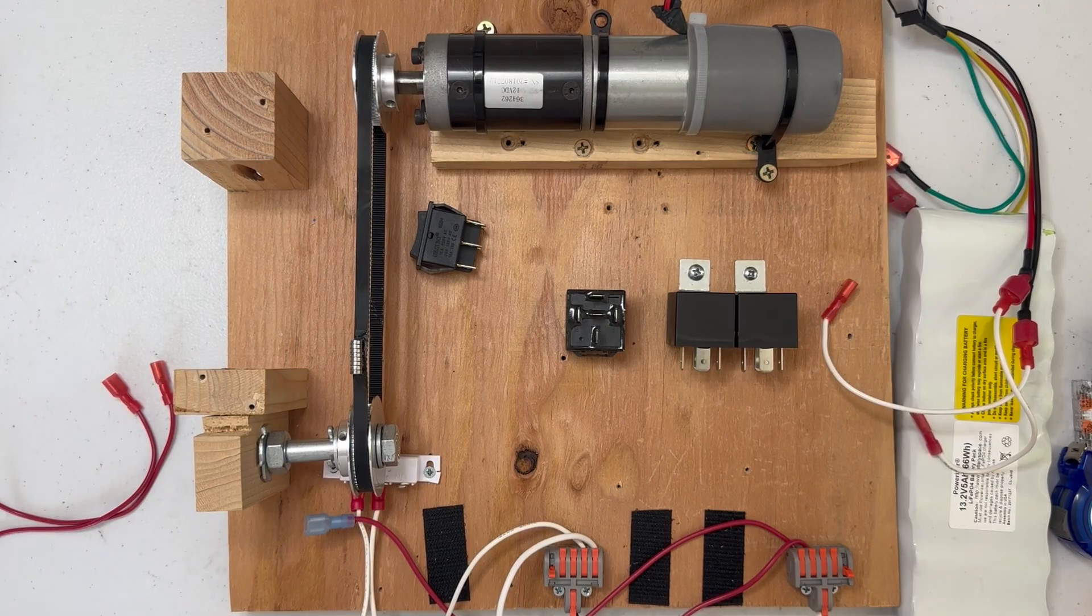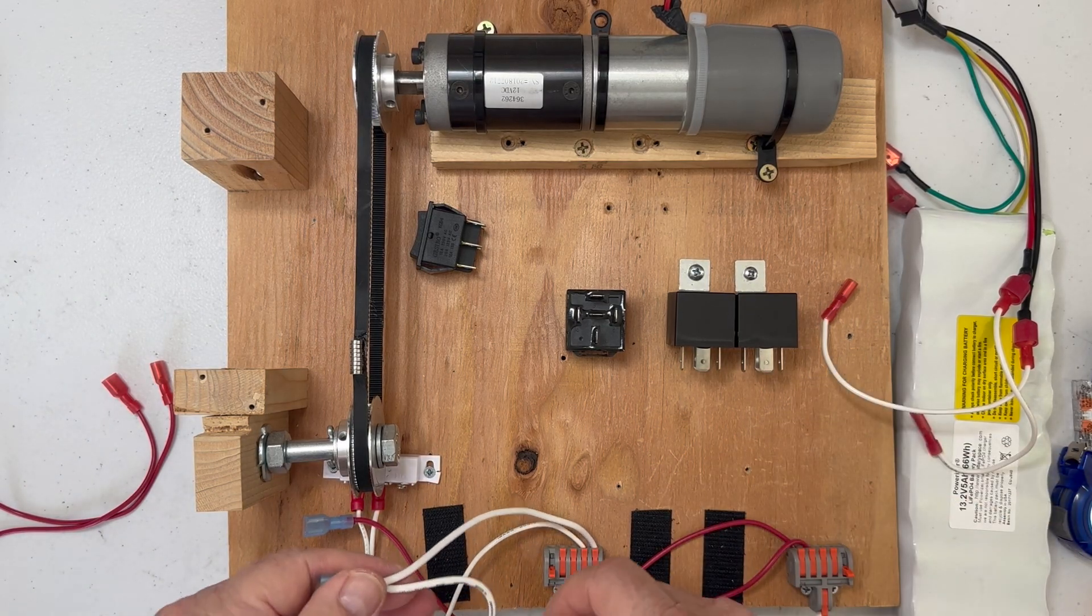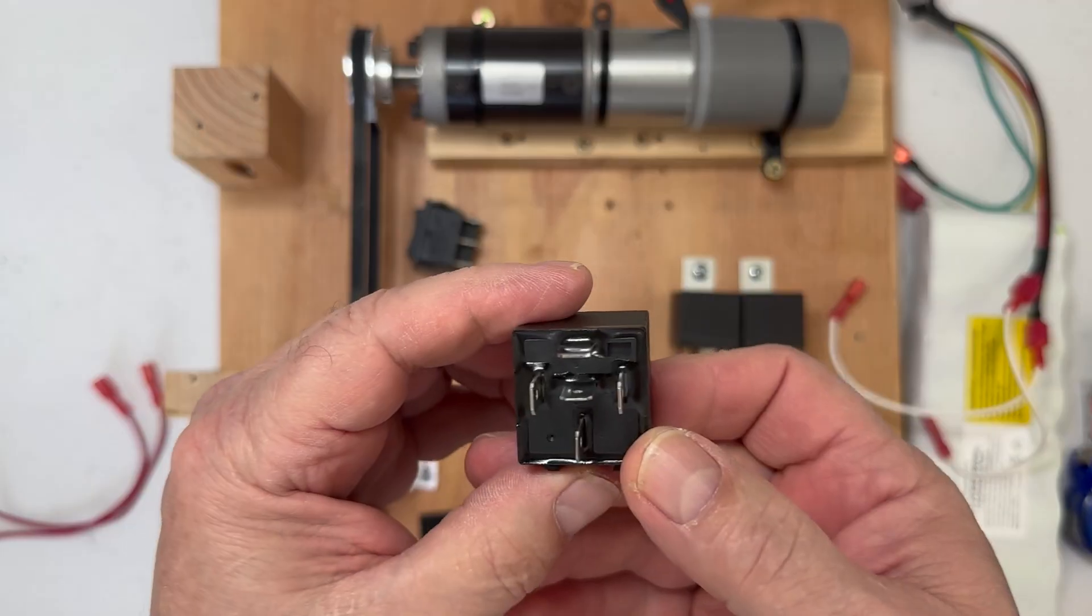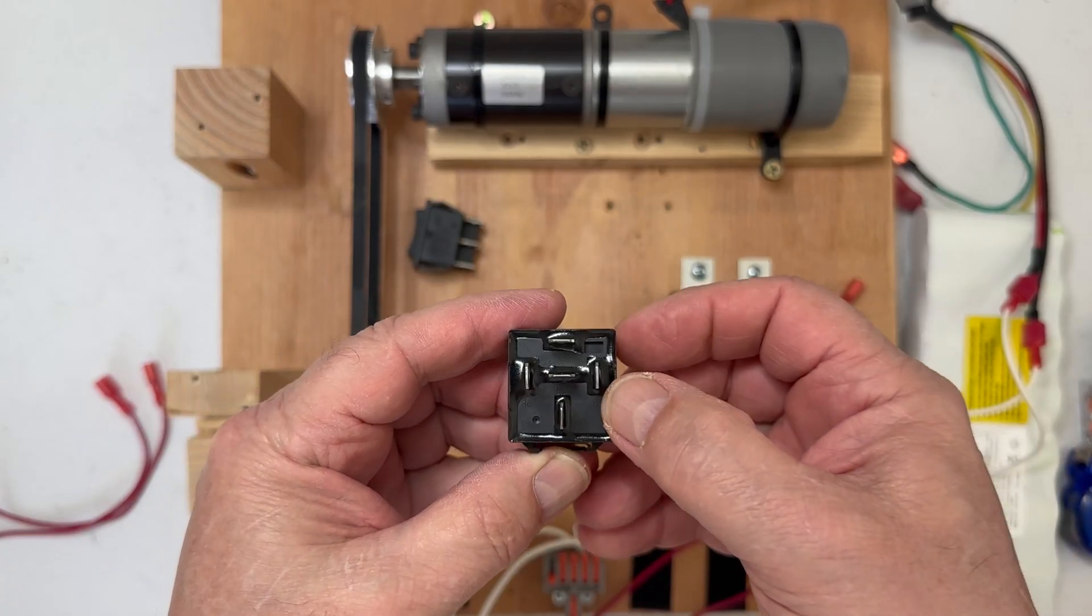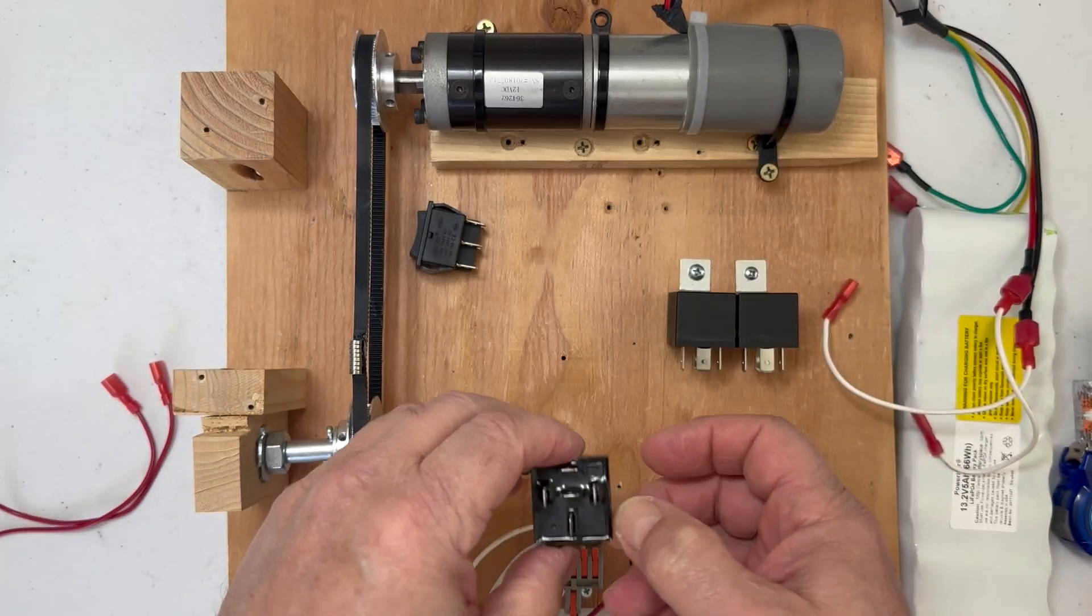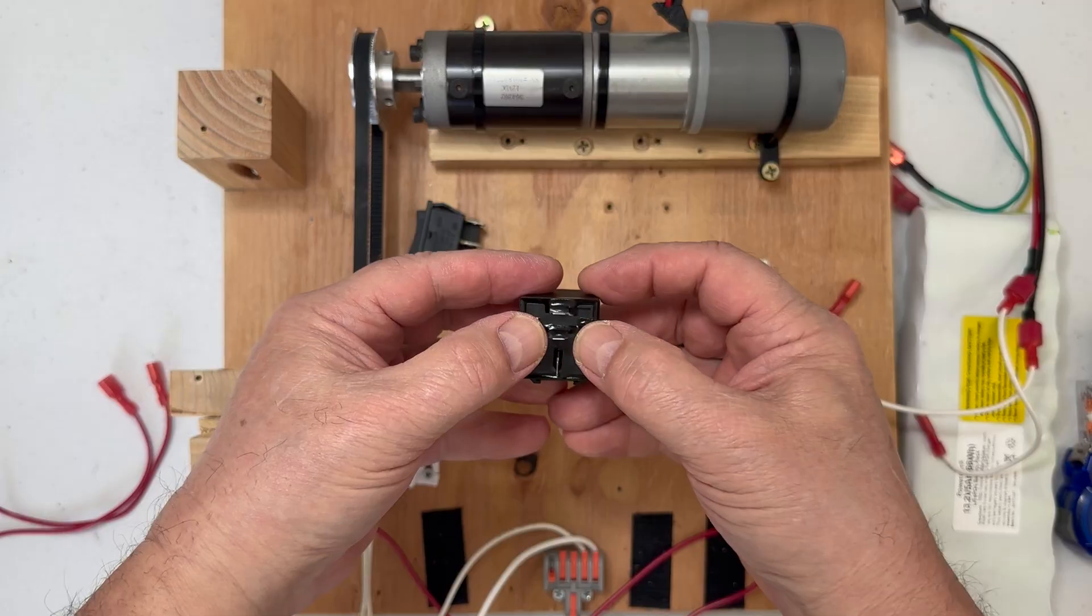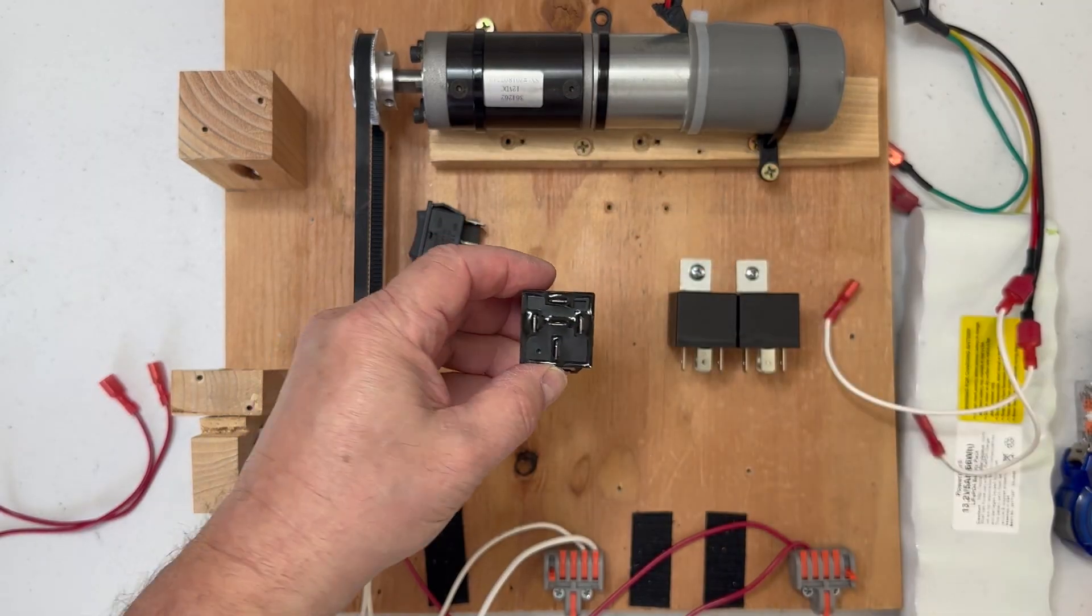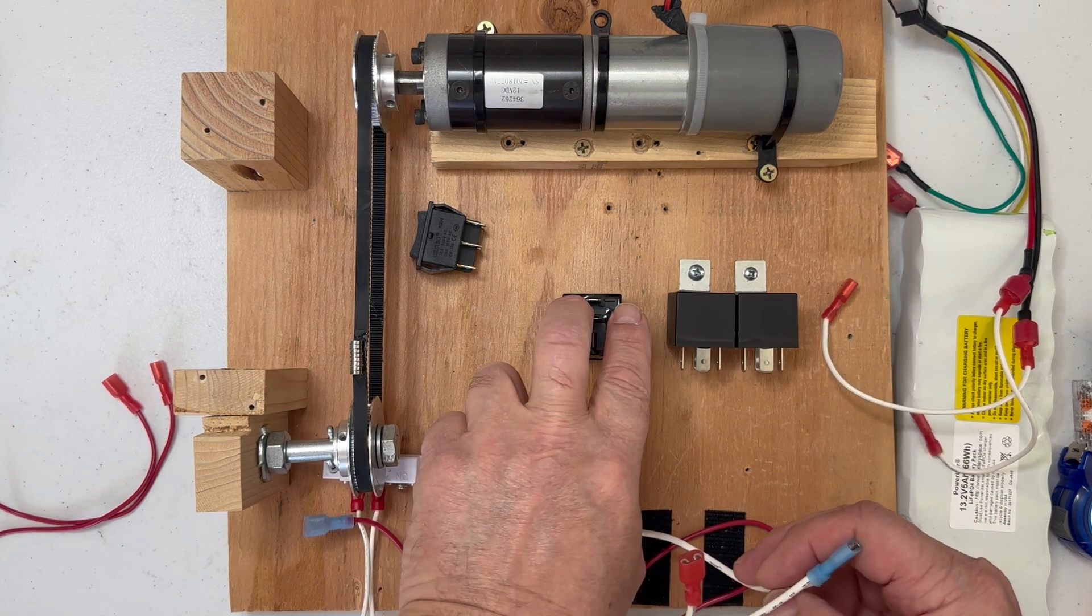I wanted to revisit the video I made about reversing polarity with two relays. First, we'll just wire this in. Here's a close-up of the relays I'm using. We have pins 85 and 86. Normally you can put positive and negative on either side, but if you're getting into more advanced stuff, you want to use 85 as your negative.